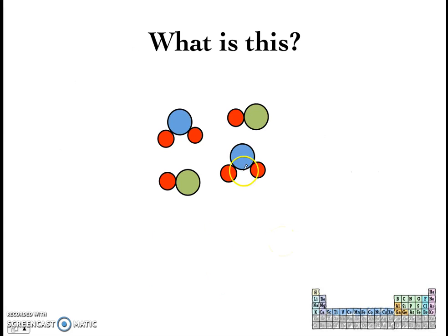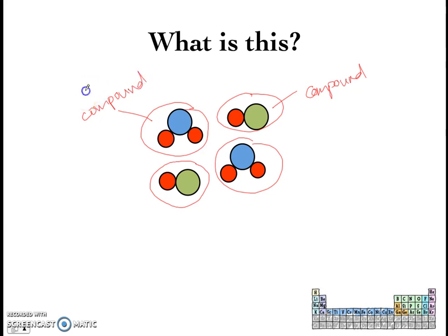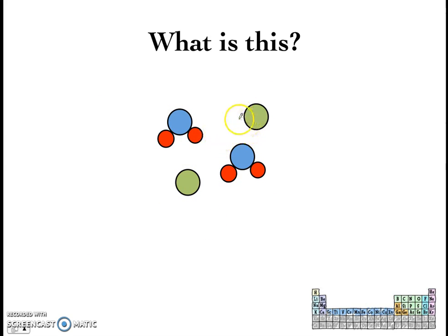With that definition of a mixture in mind, let's try another example. What do you think this is? We said this here represents a compound — it's made out of two elements, the red and the green, which are chemically combined. And this one here also looks like a compound — in fact, this was the example we used for water. So what we have here is two compounds mixed together. This is a mixture of two different compounds.